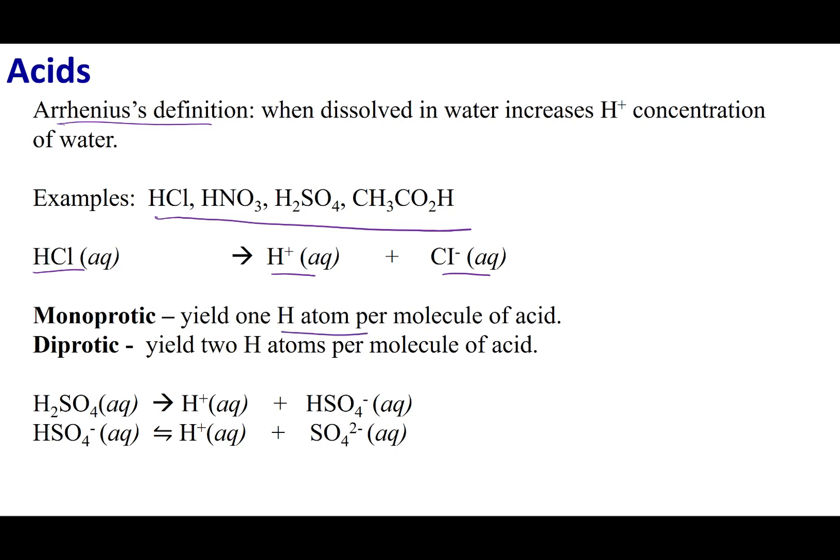If it generates one H atom per molecule, we call that a monoprotic acid. However, there are things that are diprotic acids. So diprotic acids are going to make two H atoms per molecule.